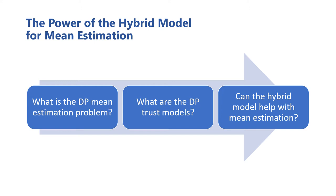In differential privacy, there are various trust models that can dictate how a solution can be computed, in turn affecting the solution's utility. We'll describe the two classic trust models in differential privacy and discuss how they each affect utility. Then we'll describe the hybrid trust model of differential privacy, which combines these classic trust models.